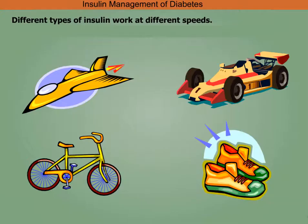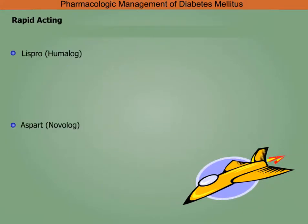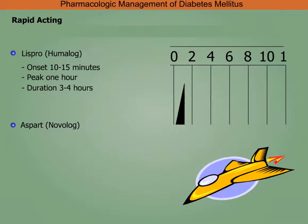Remember that insulin performs the following functions: transports glucose, stores fat, synthesizes protein, and converts glucose. Different types of insulin work at different speeds. Rapid-acting Lispro has an onset in 10 to 15 minutes, peaks in one hour.